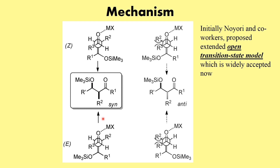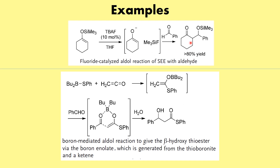In essence, it doesn't matter whether you start from Z or E silyl enol ether — you always end up getting the syn product. The two key things to remember about the Mukaiyama aldol reaction are: first, it always proceeds via an open transition state; and second, regardless of whether we start from the Z or E silyl enol ether or Z or E enolate, we always end up getting the syn aldol as the major product.